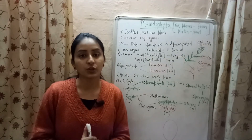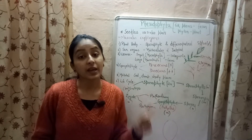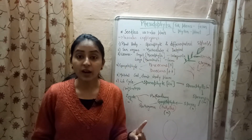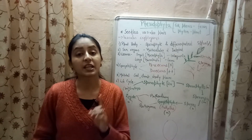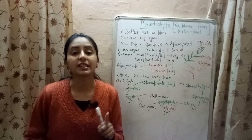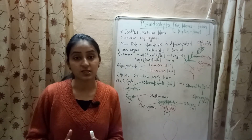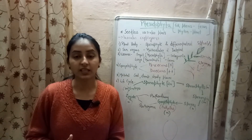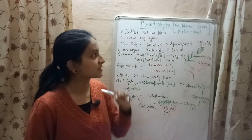Now let's differentiate bryophytes and pteridophytes. In bryophytes, the main plant body is gametophytic, whereas in pteridophytes, the main plant body is sporophytic. In bryophytes, true roots are absent and rhizoids are present, whereas in pteridophytes, true roots are present. Bryophytes are non-vascular — they do not contain xylem and phloem — whereas pteridophyta contains a vascular system. Examples of bryophytes include Riccia and Marchantia, while pteridophytes include Selaginella and ferns.